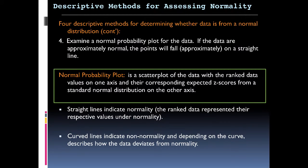We've got four descriptive methods here. The fourth one is we're going to examine the normal probability plot, and we're going to look for a straight line there.